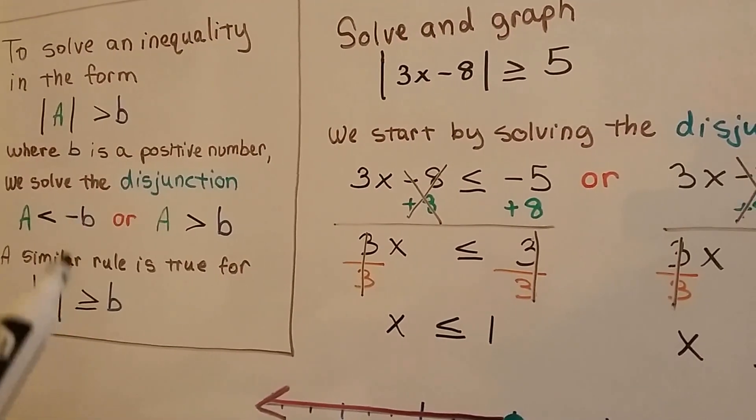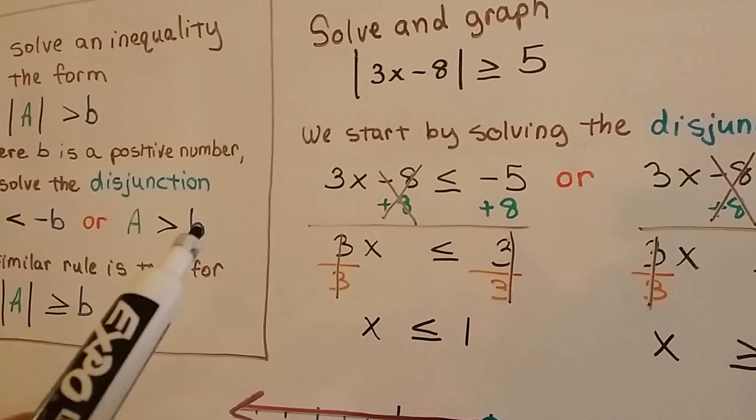And we write it as 3x minus 8 is less than or equal to negative 5, because it's less than or equal to the negative, or it's greater than the positive.